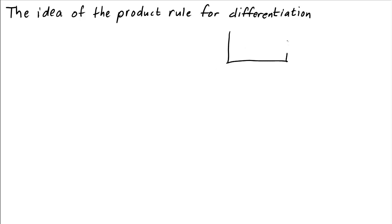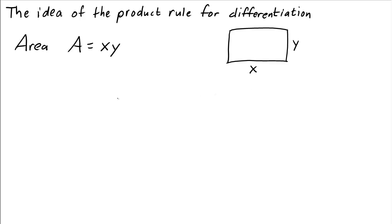Let's imagine we had a rectangle with width x and height y. The area of the rectangle is then x times y. Now let's let the length of the rectangle be a function of time — we imagine that the length is shrinking or growing with time, but that its height is fixed. So in this case, we say the area is x of t times y.